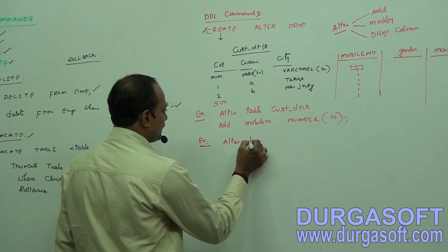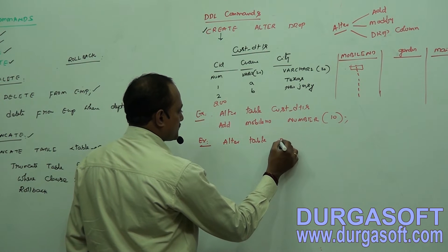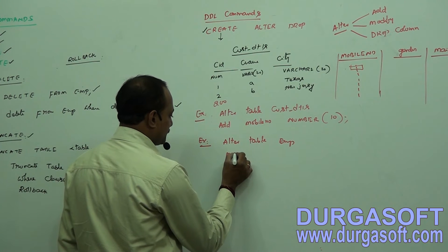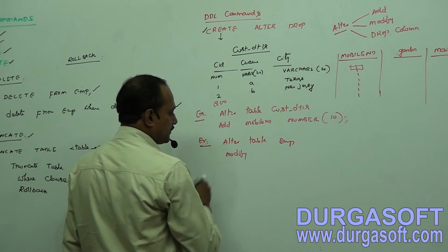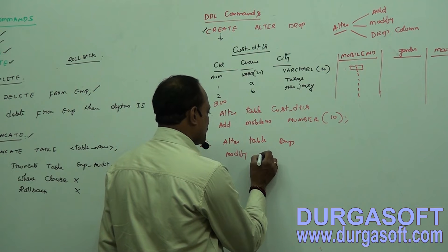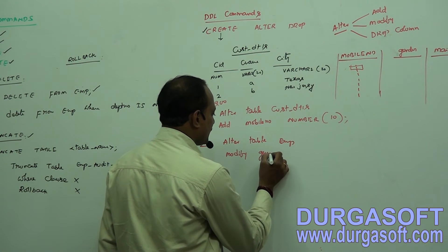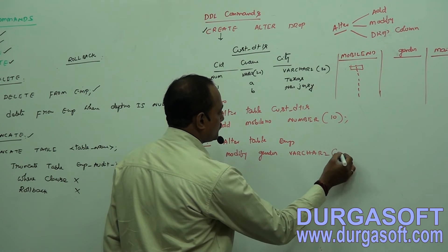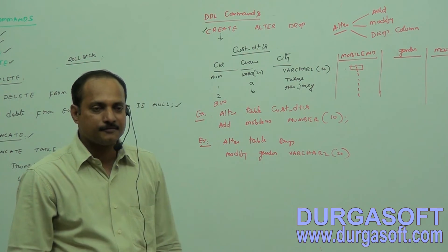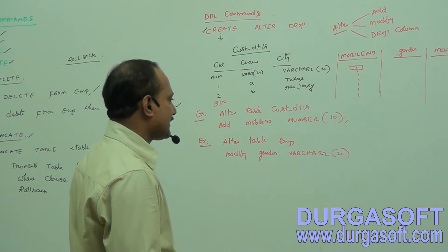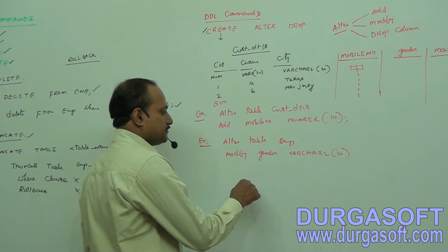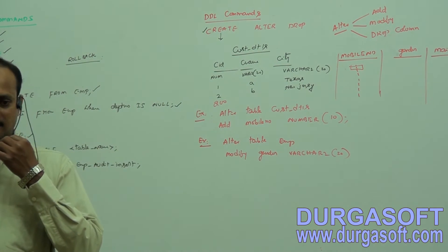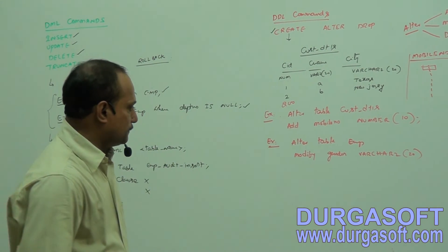For example: ALTER TABLE emp MODIFY gender VARCHAR2(20). Initially the gender column had CHAR data type — just one character length. Now it is changed to VARCHAR2(20), meaning you can enter a value of maximum 20 characters.